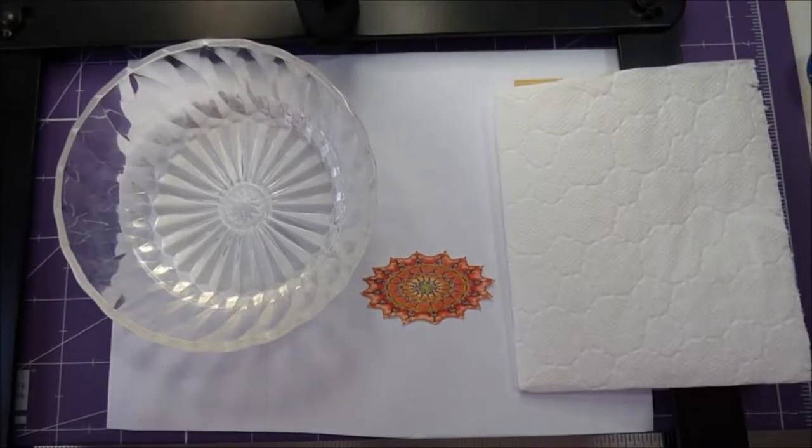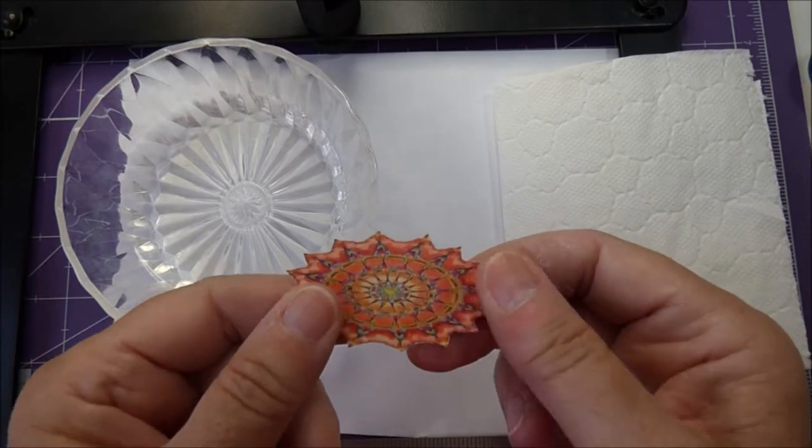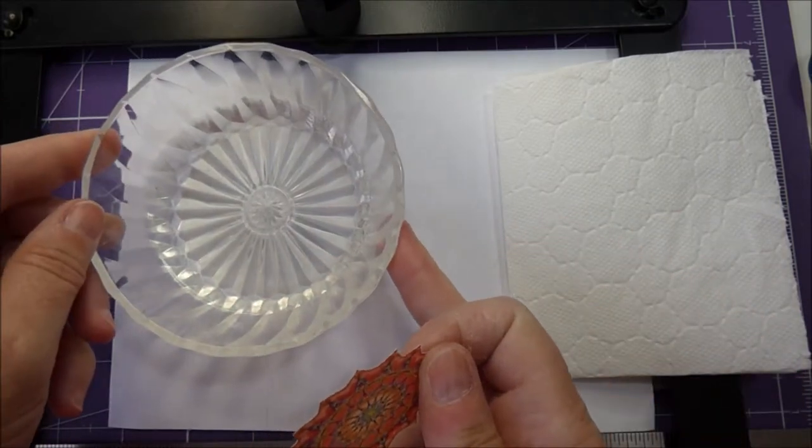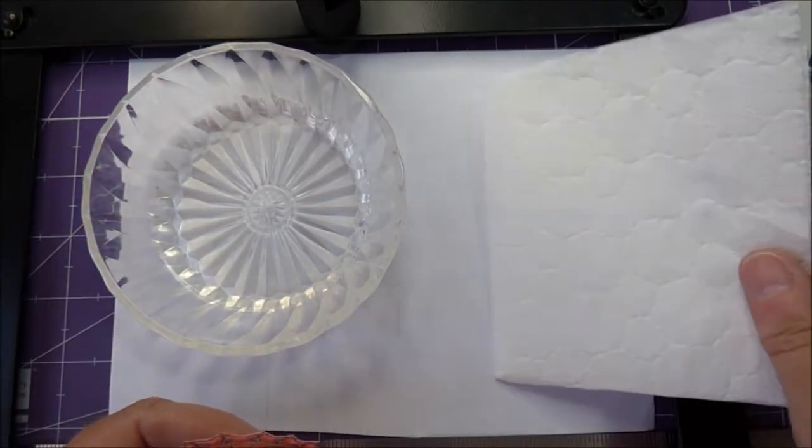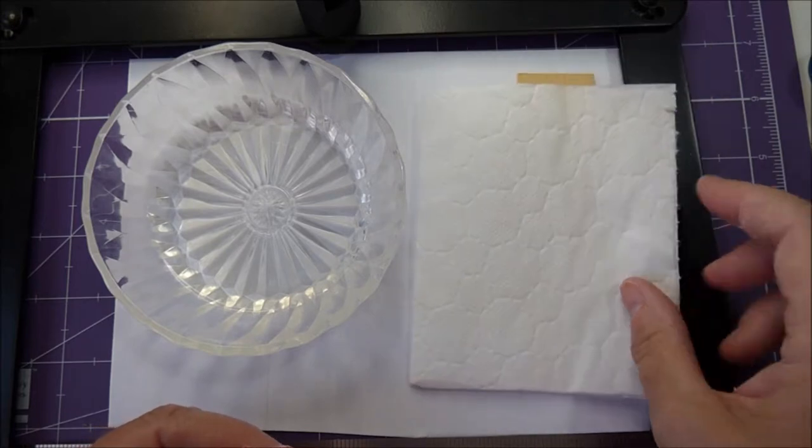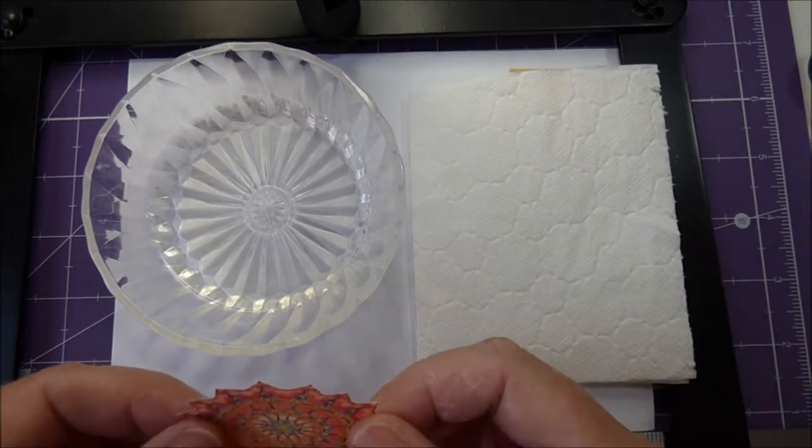To prepare the decal, you need a shallow dish of water and a piece of kitchen towel to mop up the excess water.